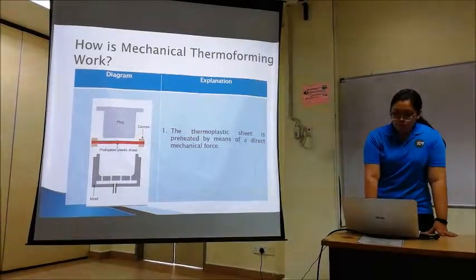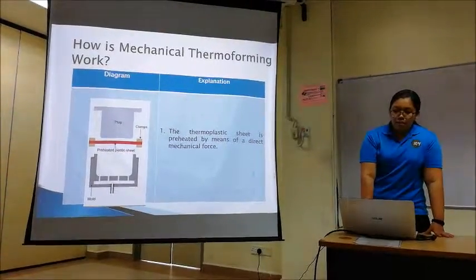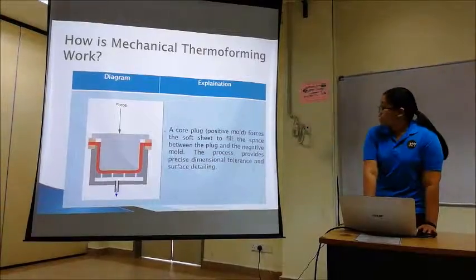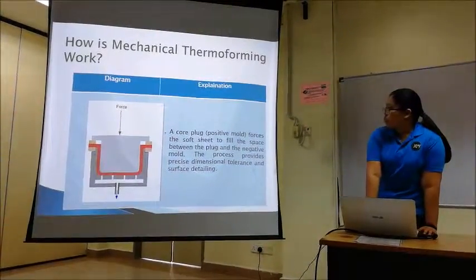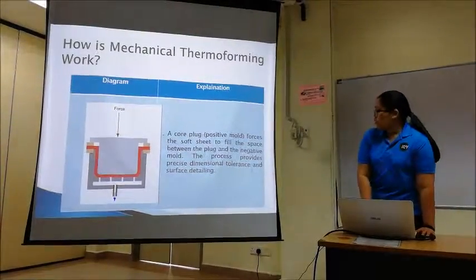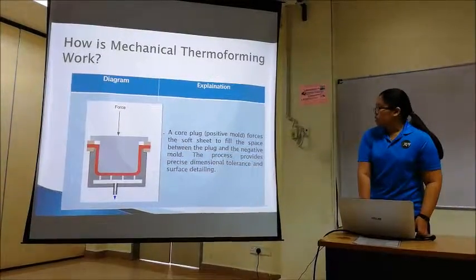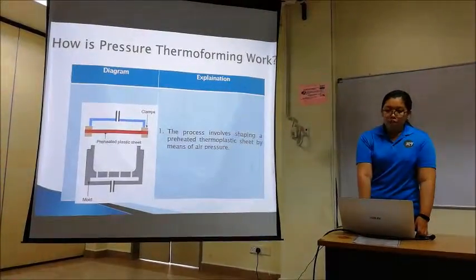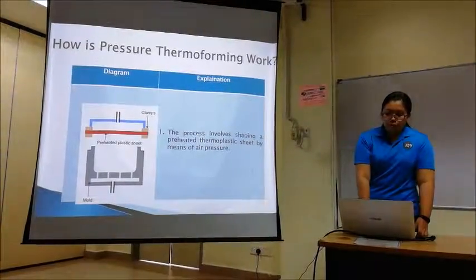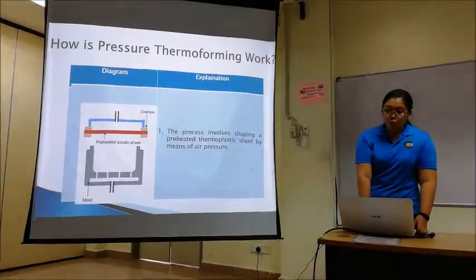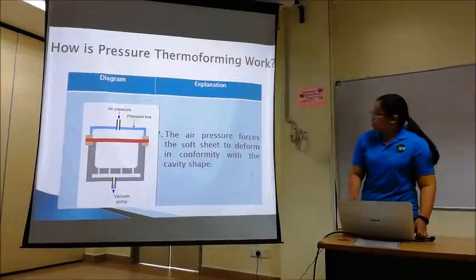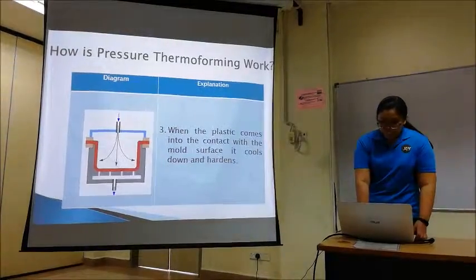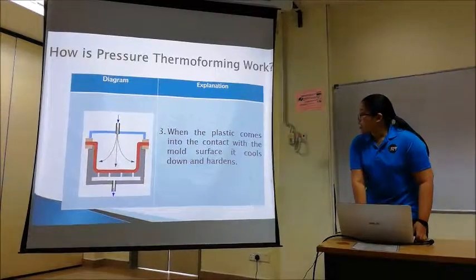For mechanical thermoforming: the thermoplastic sheet is preheated by direct mechanical force. The core plug (positive mold) forces the soft sheet to fill the space between the plug and the negative mold. The process provides precise dimensional tolerances and good surface detail. For pressure thermoforming, the process involves shaping a preheated thermoplastic sheet by means of pressurized air. The pressure forces the soft sheet to deform in conformity with the cavity shape. When the plastic comes into contact with the mold surface, it cools down and becomes hardened.